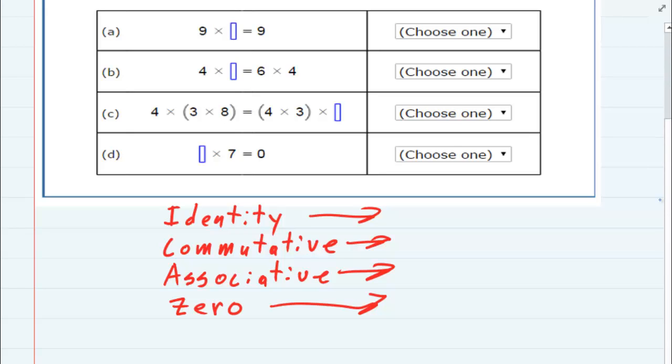Since these are the properties for multiplication, we start with identity. Identity means that if you take a number and multiply it by one, any number times one, you get the same number that you started off with. So that's identity.